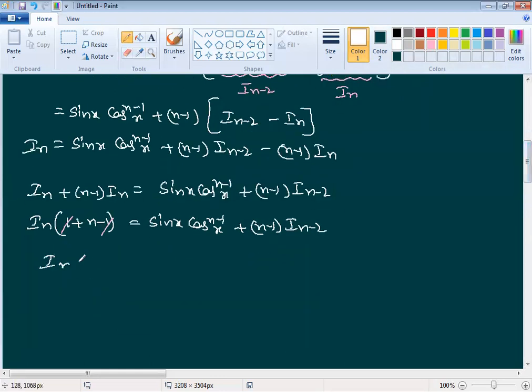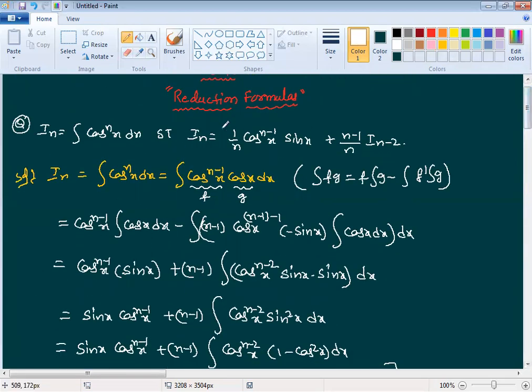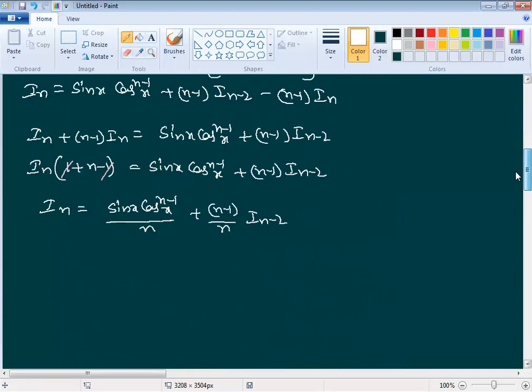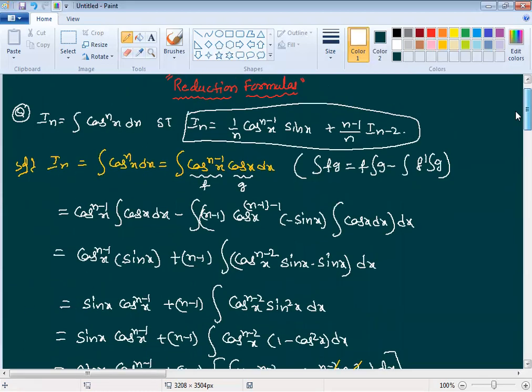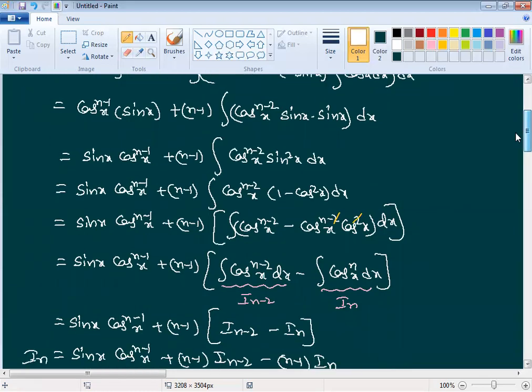In equal to sin x into cos power n minus 1 x divided by n plus n minus 1 by n times In minus 2. This is what we needed to prove. The given formula and our proof match exactly. You can use this to solve cos power 5x, 4x, or any power.